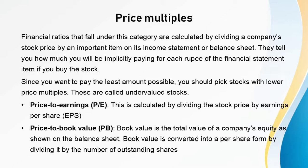Financial ratios that fall under the price multiples category are calculated by dividing a company's stock price by an important item on its income statement or balance sheet. They tell you how much you will be implicitly paying for each rupee of that financial statement item if you buy the stock. Since you want to pay the least amount possible, you should pick stocks with the lowest price multiples — these are called undervalued stocks. Price multiples are calculated using items like sales, cash flows, and total assets, but earnings and book value are the most commonly used.